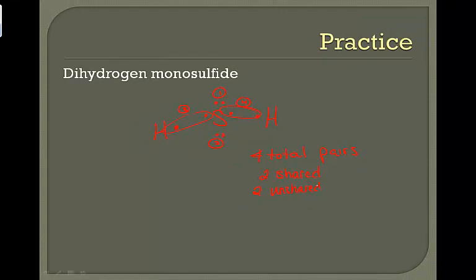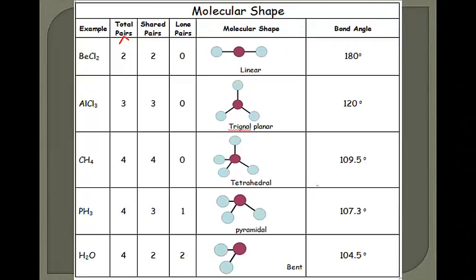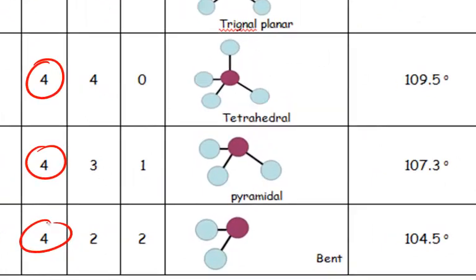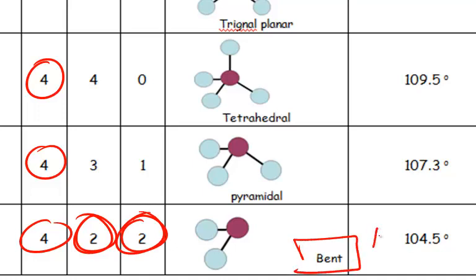Going back to our molecular shape sheet, our options for four total pairs are in that row. When we go to the shared pairs column, we find two shared pairs and two unshared pairs. So our molecule is bent with a bond angle of 104.5 degrees.